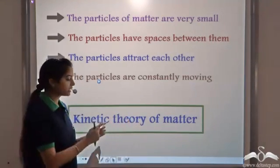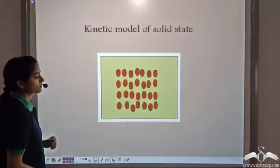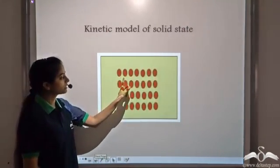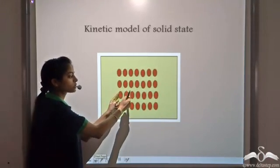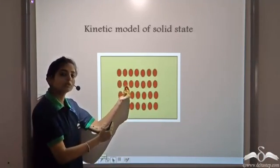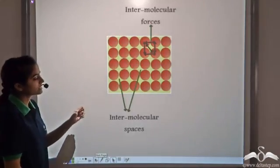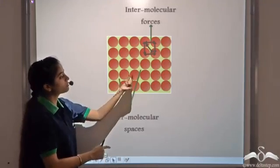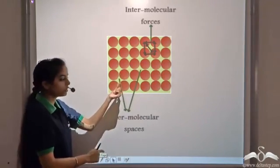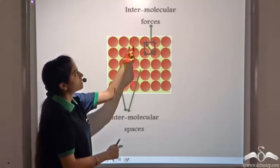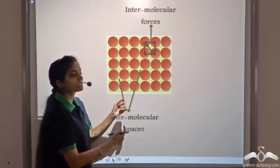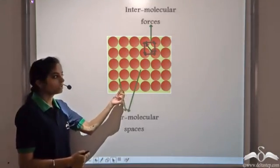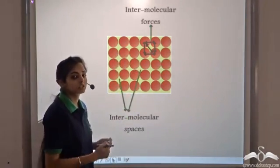Based on this theory, we get the kinetic model of the three states. This is the kinetic model of the solid state, according to which the particles are very close to each other and they vibrate about their mean positions. Since the particles in a solid are very close to each other, the intermolecular spaces between them are very small, and that is why the intermolecular forces between the particles are very strong.